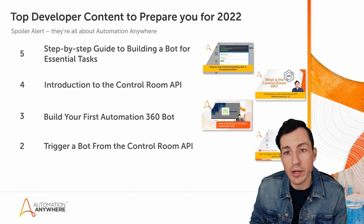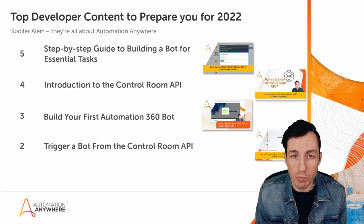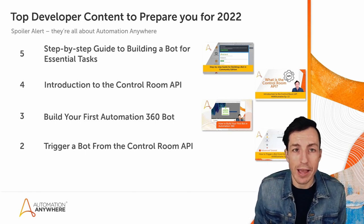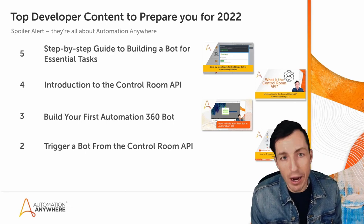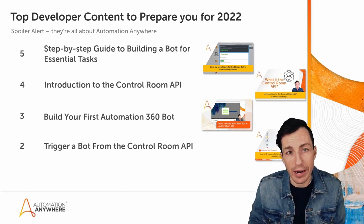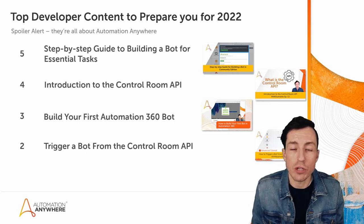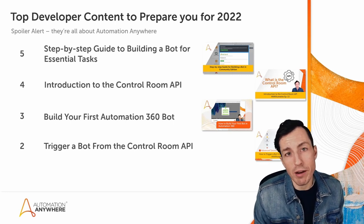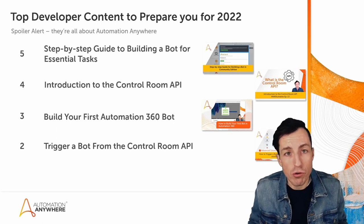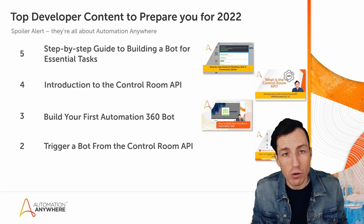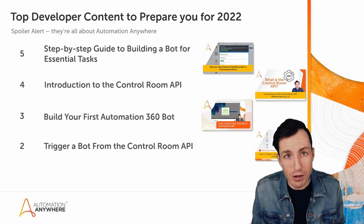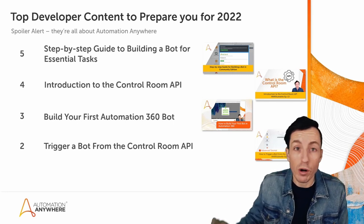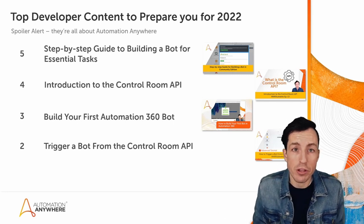Number two is back to the Automation Control Room — a very popular topic for 2021 — which was to invoke a bot using the Control Room API. In this tutorial you will have to have a dedicated bot runner so that you can actually have that bot execute, so you won't be able to do this one in Community Edition. But this is great for people who are starting to explore new ways to invoke their bots.